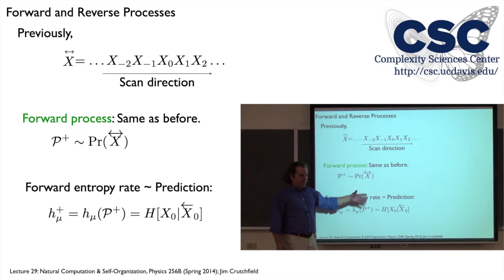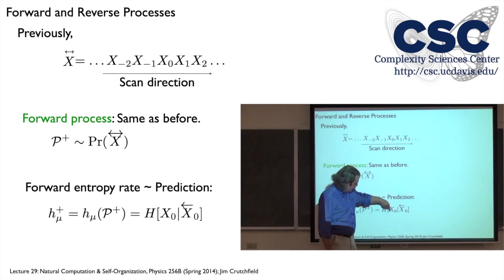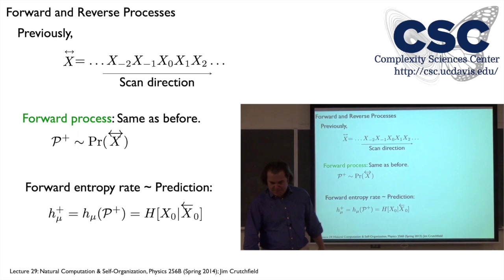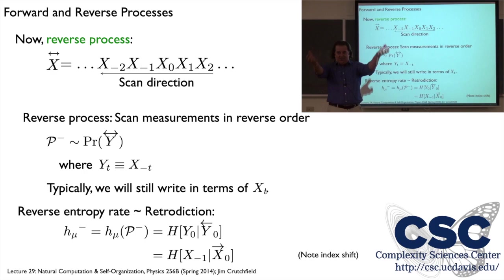We have various quantities — we have the forward entropy rate h-mu-plus, which is the uncertainty in the next symbol given the semi-infinite past. But now we have to talk about the reverse process. I'm still giving you this lattice of variables, but I want you to scan this way — right to left.